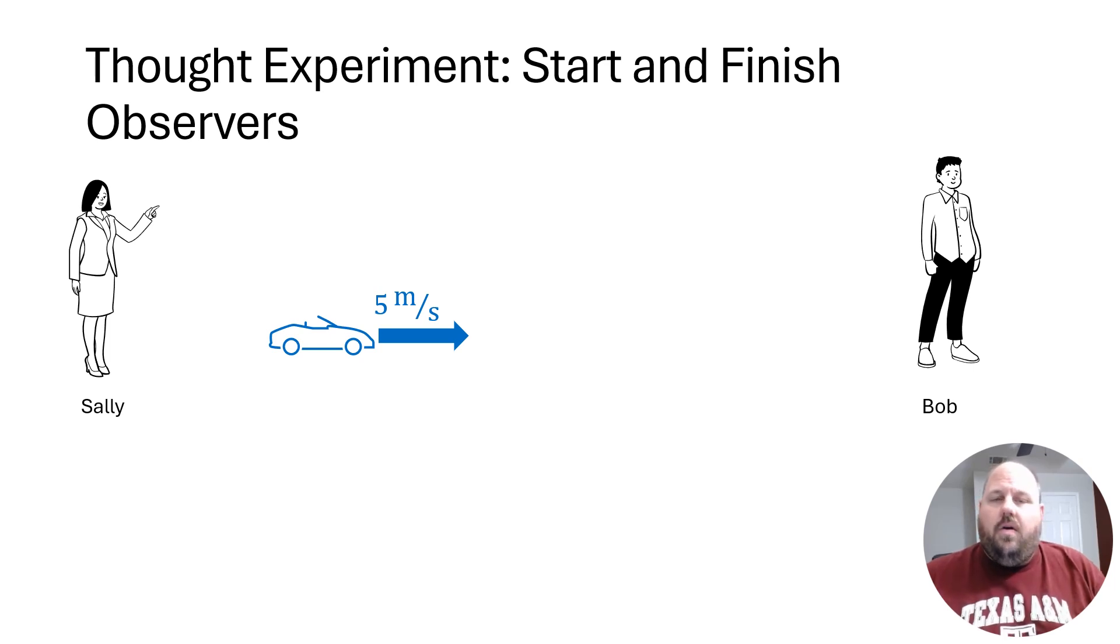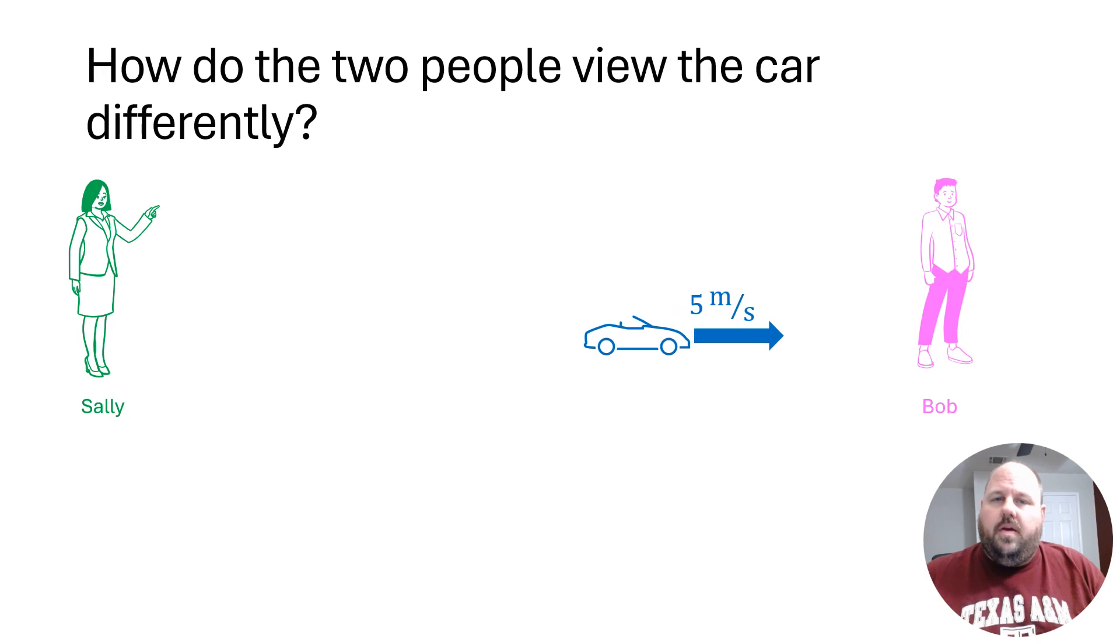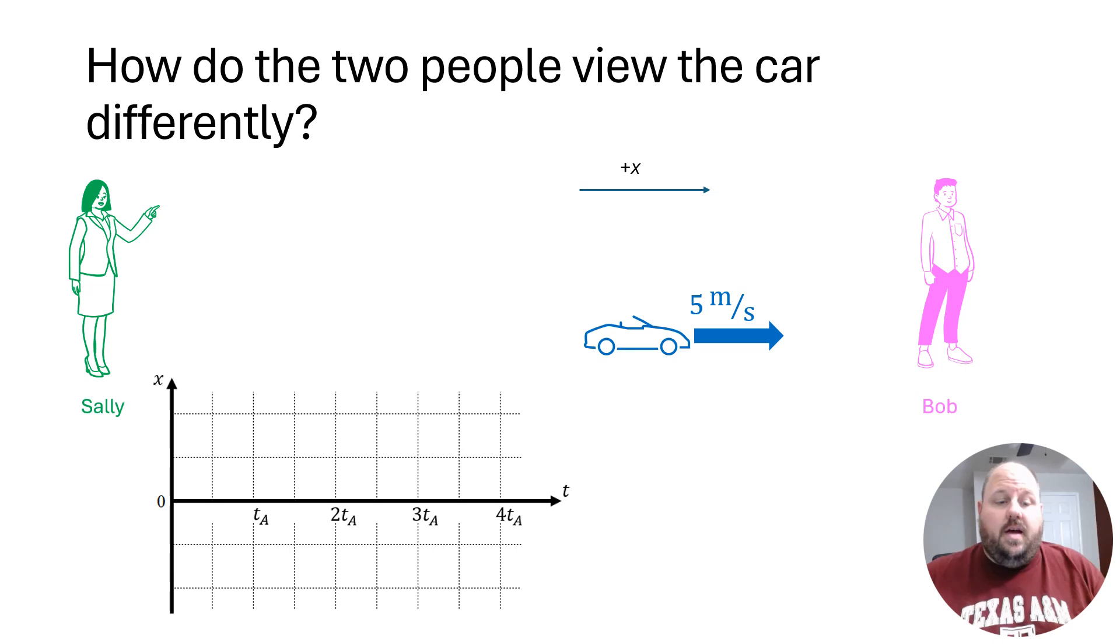And so if we think, are those two people going to view this differently? We can just do a position versus time graph like we've done in the past. So if towards Bob is the positive x direction, when we graph position versus time with two dots instead of just one, a blue dot representing where Bob thinks the car is, a green dot where Sally thinks the car is, we would notice that those dots would be in different locations. From Bob's point of view, that car is 15 meters to the left. From Sally's point of view, that car is 5 meters to the right.